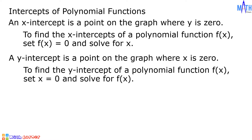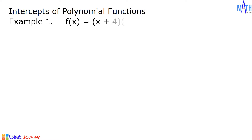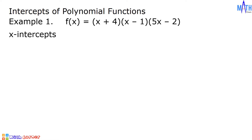Let us have some examples. Example number 1: f of x equals quantity x plus 4 times quantity x minus 1 times quantity 5x minus 2. Since this polynomial function is written in factored form, we can easily determine the x-intercepts. If we set f of x equal to 0, we have 0 equals quantity x plus 4 times quantity x minus 1 times quantity 5x minus 2.